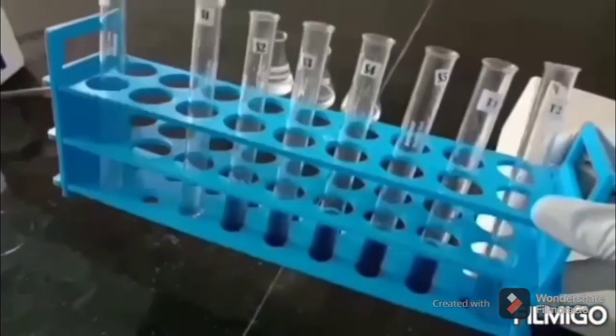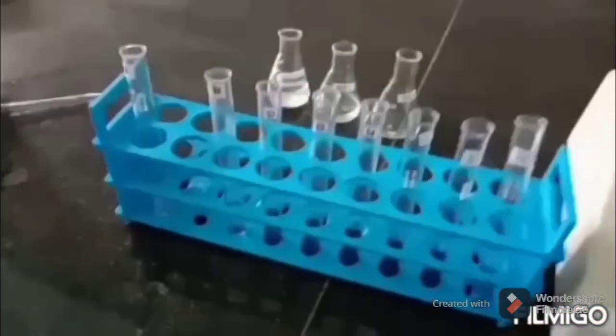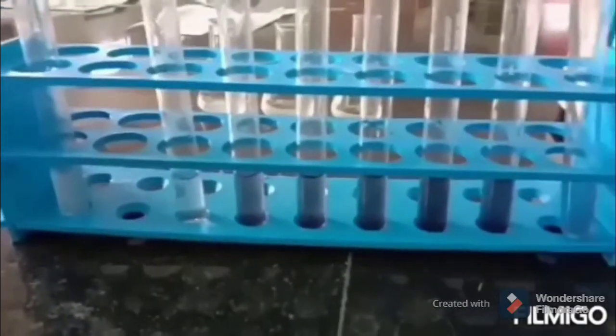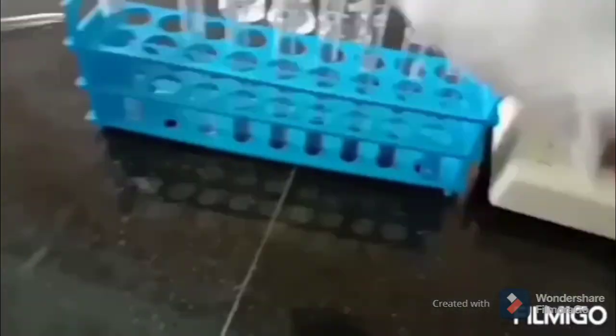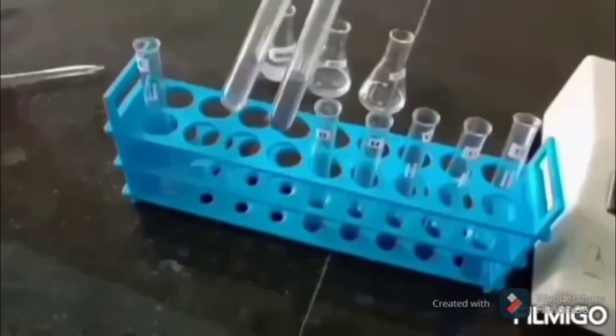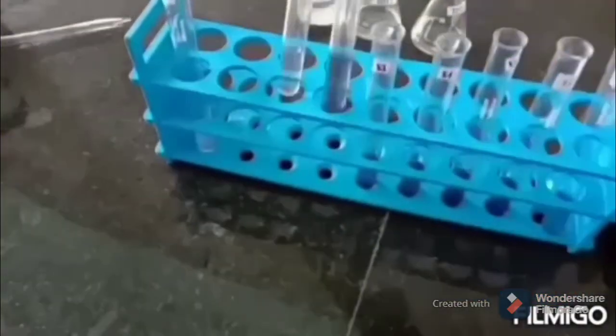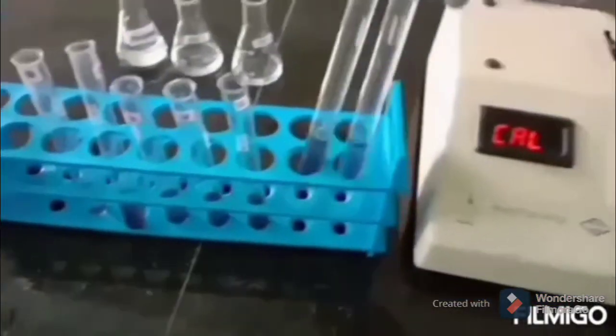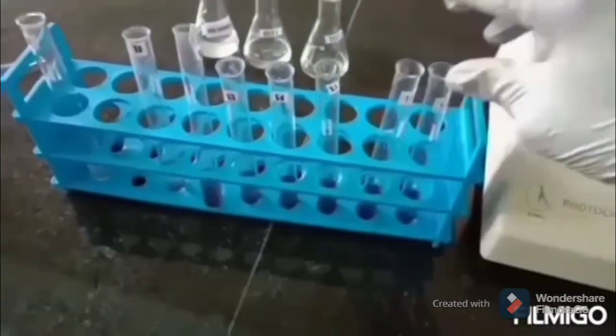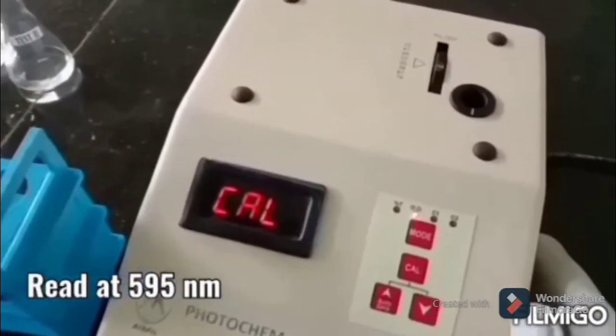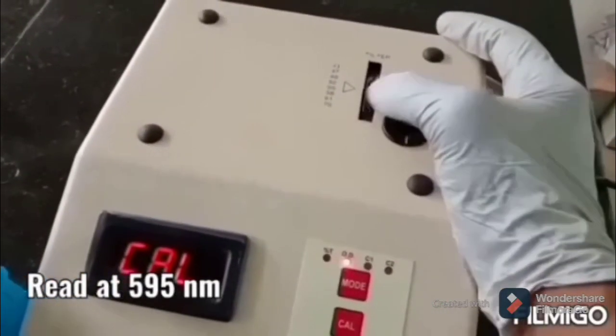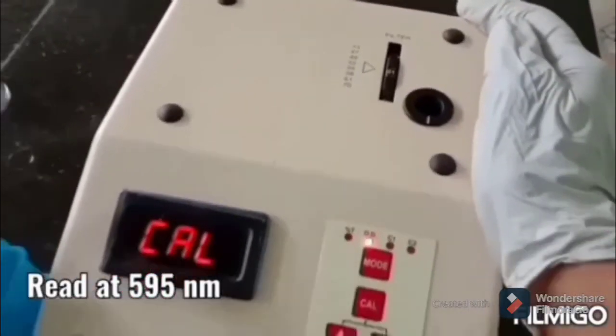After boiling, as you can see, a deep blue color is developed in standard and test solutions. This is S1 and S2, you can see the color development, as well as T1 and T2. Now the readings are taken at 595 nanometers using a colorimeter.